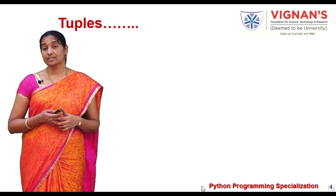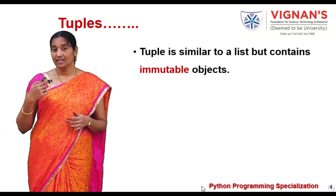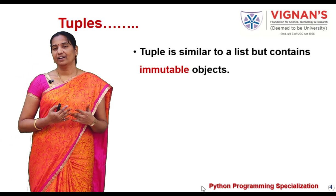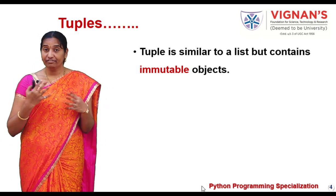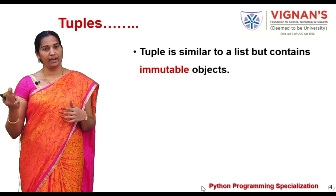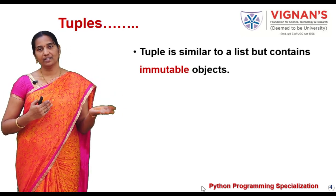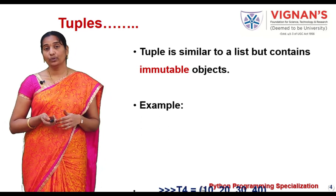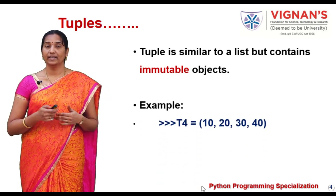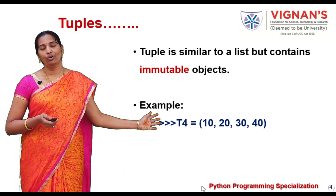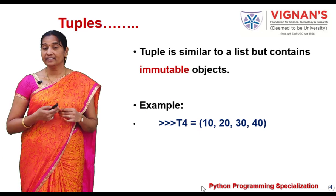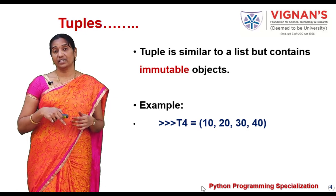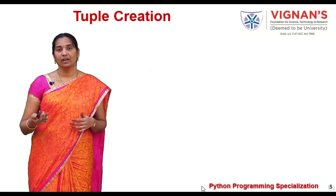Tuples are basically lists with immutable objects. Similar to list, a tuple allows us to have a collection of elements — a compound data structure which allows you to store a collection of different data objects. You can have numbers, floating point numbers, strings, and even other complex data types like lists, tuples, and dictionaries. But the objects in the tuple are immutable. That is, once you create the tuple, it is not possible to alter it. It is not possible to add new elements, delete existing elements, or update existing elements.